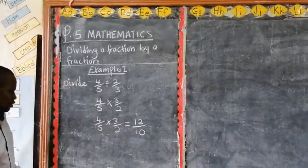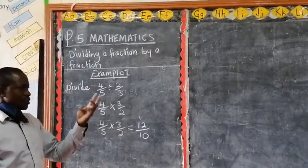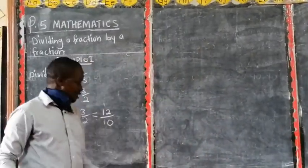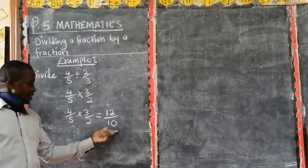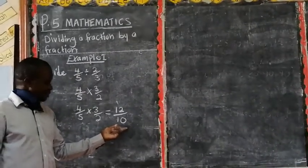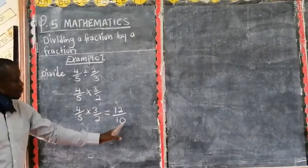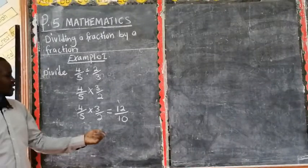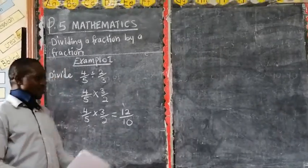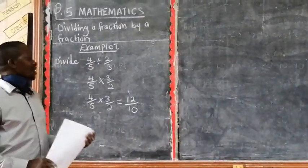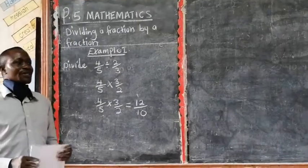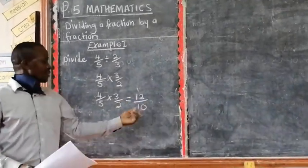So we also looked at types of fractions. And we said that we have proper fraction, improper fraction, and mixed fraction. Now this one here is an improper fraction. Once you see that the numerator is bigger than the denominator, that is called an improper fraction. Therefore, it is not universal to leave your answer in an improper fraction. Once you get your answer when it is an improper fraction, please you divide it. So here we are going to divide 12 divided by 10.